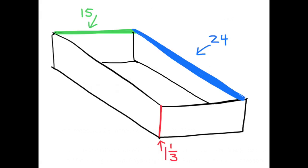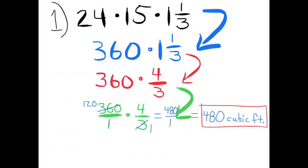This drawing represents the rectangular prism being filled: 24 feet long, 15 feet wide, and one and one-third feet deep. 24 feet times 15 feet times one and one-third is the same as 360 times one and one-third, or 360 times four-thirds, which equals 480 cubic feet.